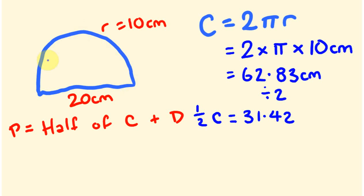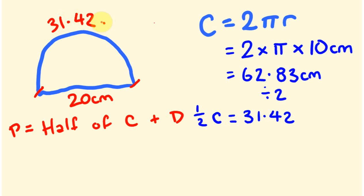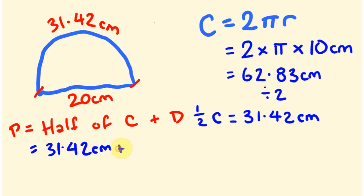Then we have to add the diameter. This distance going around the curved part is 31.42 centimetres, and we're going to add this to our diameter. So 20 plus 31.42 — we add these together. The perimeter equals 31.42 centimetres plus 20 centimetres, which equals 51.42 centimetres.